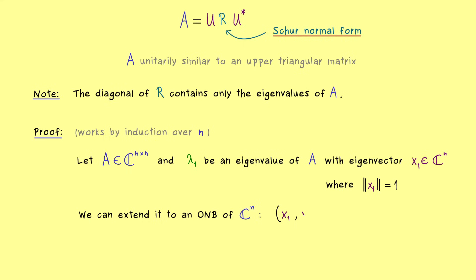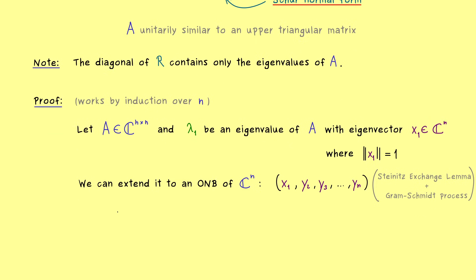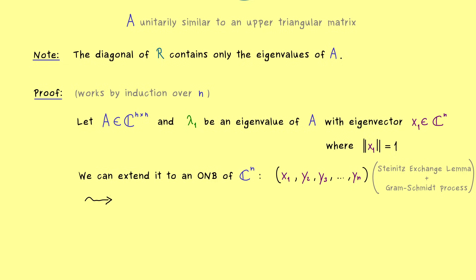So we just have to add more vectors to x_1 such that we get an ONB of C^n. And maybe let's call these additional vectors y_2, y_3 and so on. Obviously we need exactly n vectors and they should be orthogonal to each other and normalized. And you should know, it's no problem at all to create such an ONB, because on the one hand we have our Steinitz exchange lemma, which helps us to create a new basis. And on the other hand we have the famous Gram-Schmidt process, which transforms every basis into an ONB. So the existence of such a basis is not a problem.